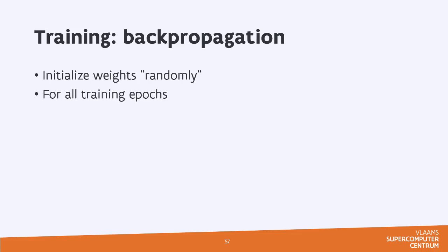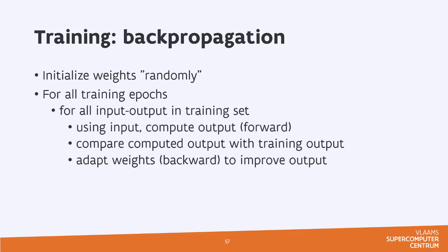For all training epochs, that means a training step, that means going over all input and output pairs in the training set. We're going to use the input and we're going to compute the output. So that's a forward computation. Then we can compare the computed output with the training output, which we've given. This is supervised learning, so we have training output for each training input.